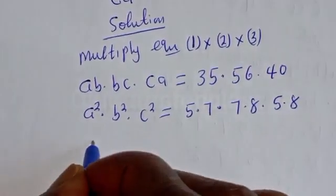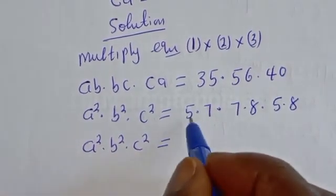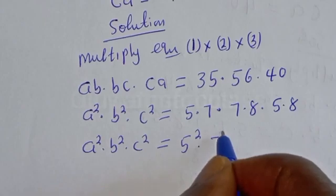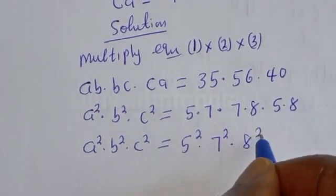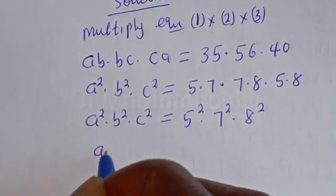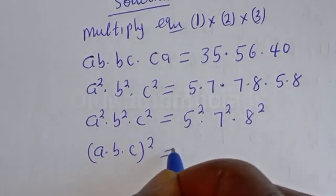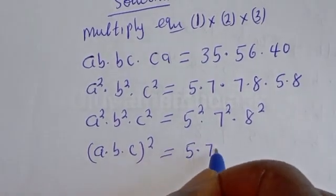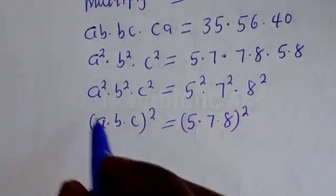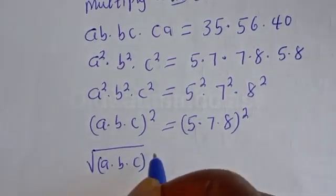This gives us A² multiplied by B² multiplied by C² is equal to 5² multiplied by 7² multiplied by 8². This can be written as (A×B×C)² is equal to (5×7×8)².